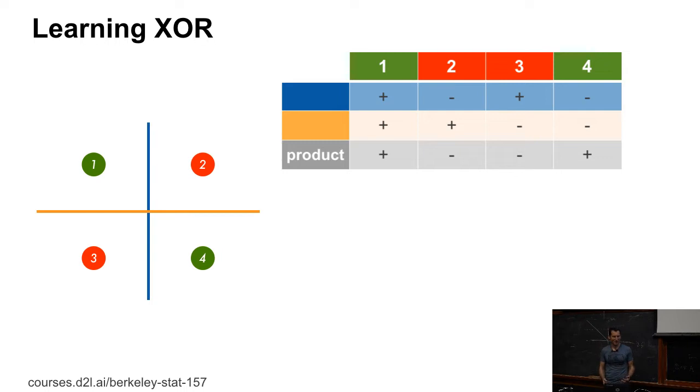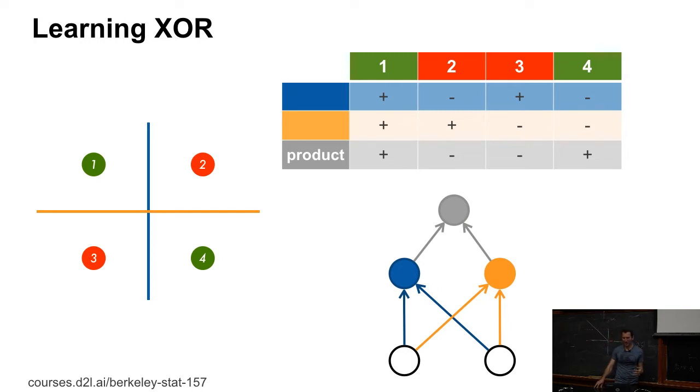But now, the really cool thing is that if I take the product of those two classifiers, I get a solution to the XOR problem, which is utterly unsurprising given that I can actually write XOR as multiplications in this way.